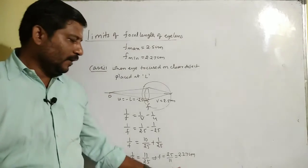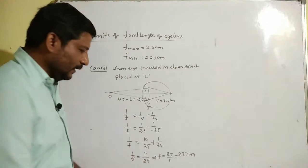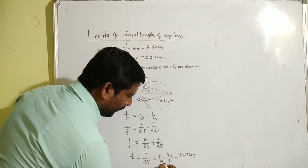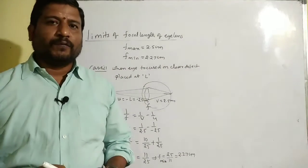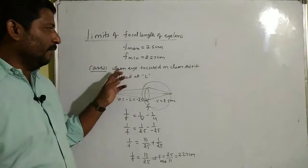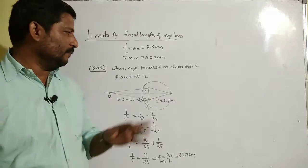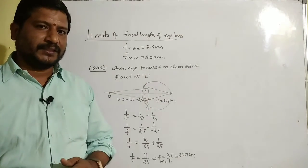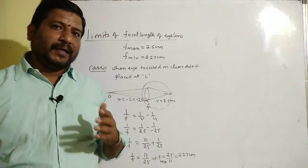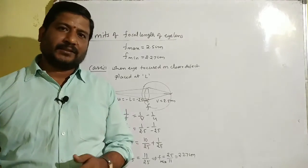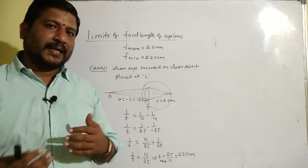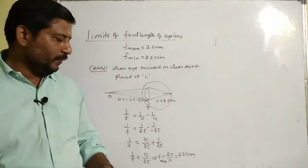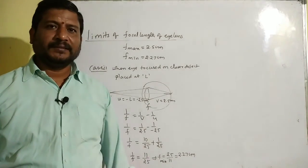So, this is the minimum focal length of the eye lens, f minimum = 2.27 cm. When the eye focuses on a closer object placed at the least distance of distinct vision, to keep the image distance constant, the eye lens adjusts its focal length to the minimum value of 2.27 cm.